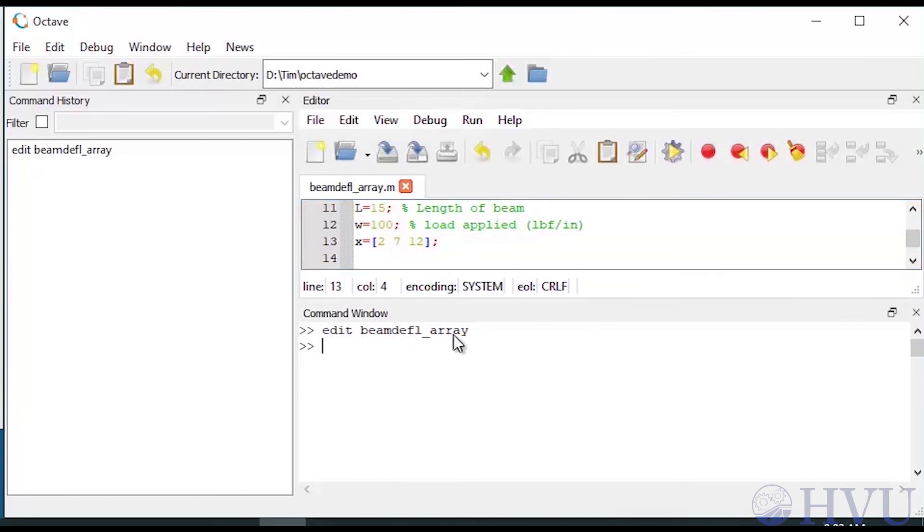I'll run the file by typing the file name BEAMDEFL underscore array at the command prompt and pressing enter. I get three deflections corresponding to the three X values.